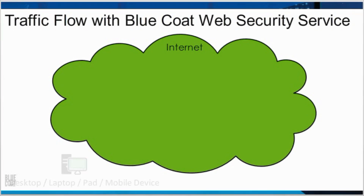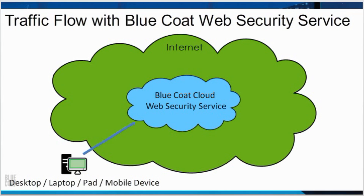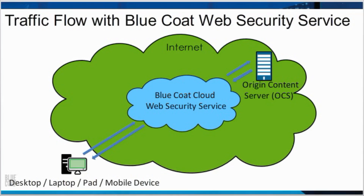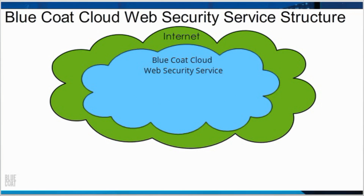A web request is sent from the desktop, laptop, pad, or mobile device to the Bluecoat Cloud Web Security Service. The Bluecoat Cloud Web Security Service will act as an intermediary with the web request destination, the origin content server. If the Bluecoat Cloud Web Security Service does not block the traffic due to policy enforcement, then the web request is forwarded to the origin content server. The return traffic will be inspected. If the content contains malware, it will be blocked. Otherwise, the content will proceed to the source that initiated the web request.